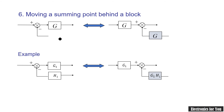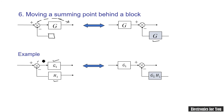The sixth rule is moving a summing point behind a block — that is, after a block. If you move the summing point after the block, the transfer function of the incoming branch will be multiplied by the block's transfer function G. For example, if the block's transfer function is G1 and the branch transfer function is H1, moving the summing point after the block gives H1 times G1. The sign of the summing point remains as it is.